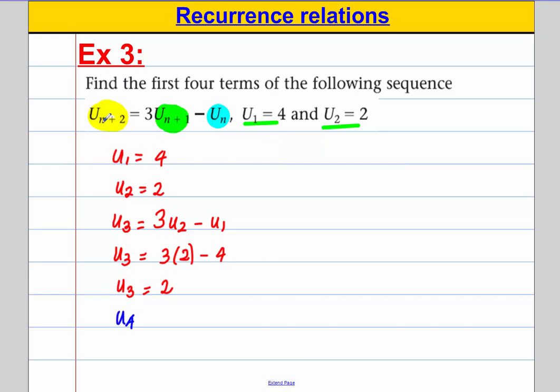Now let's try and work out u4. Let's think about this. u4, we're going to put n is 2 in here. If you think about u4, it's three times the one just before it. So three times u3, take away u2. u4 would therefore be equal to 4.